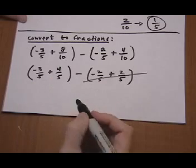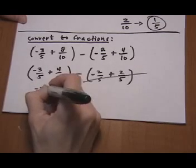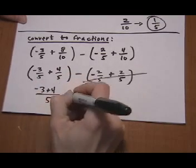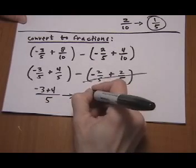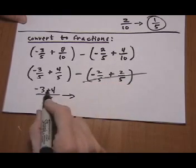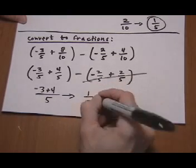Minus 3 over 5, plus 4 over 5, is minus 3 plus 4, over 5. Different signs, therefore, keep the sign of the bigger one, positive, and find the difference of the numbers, 1 fifth.